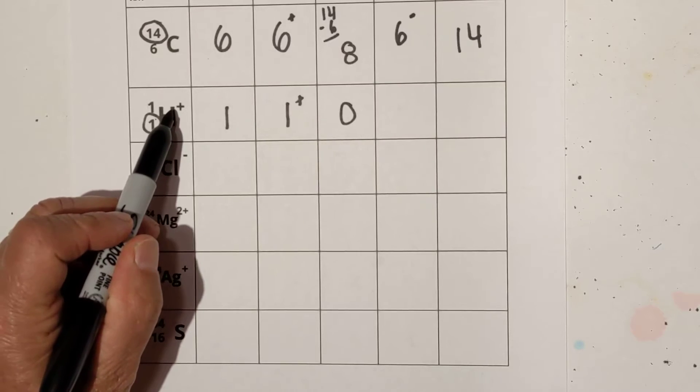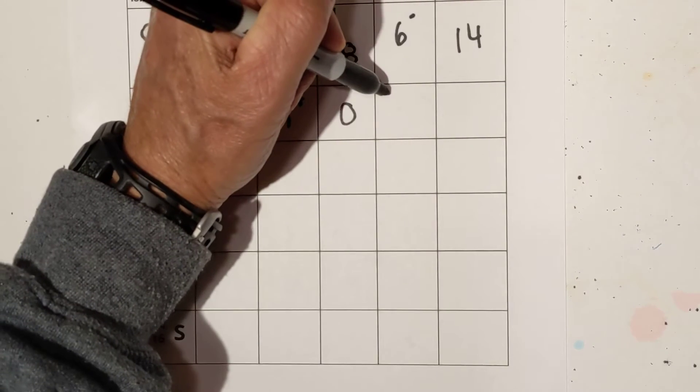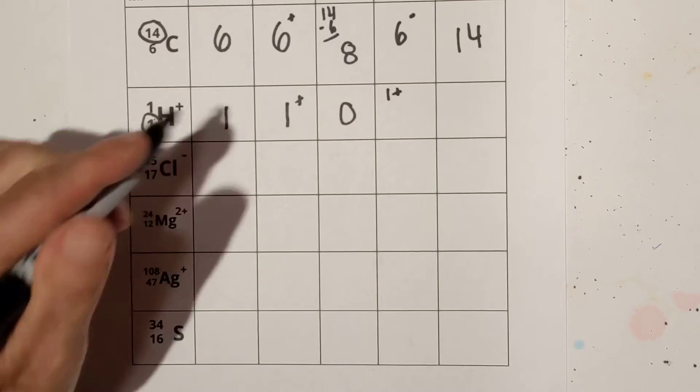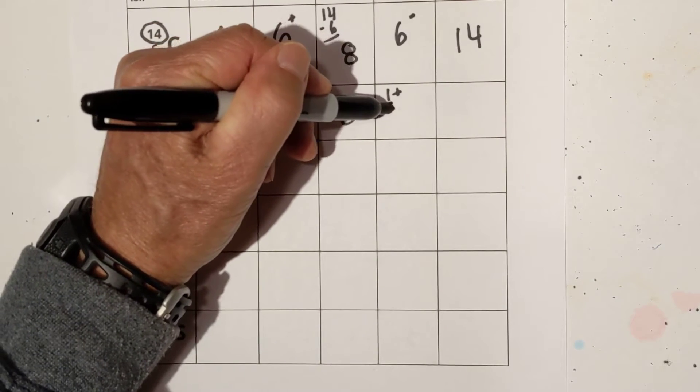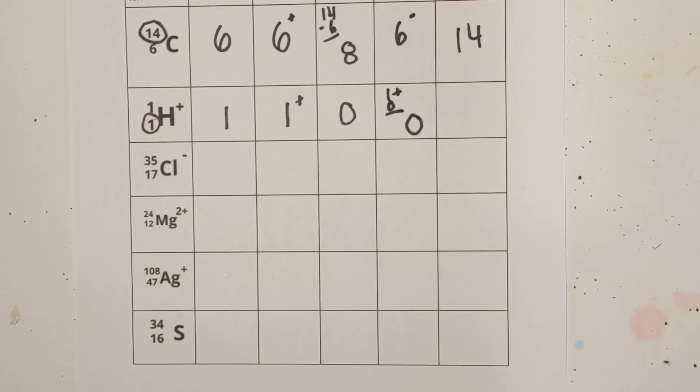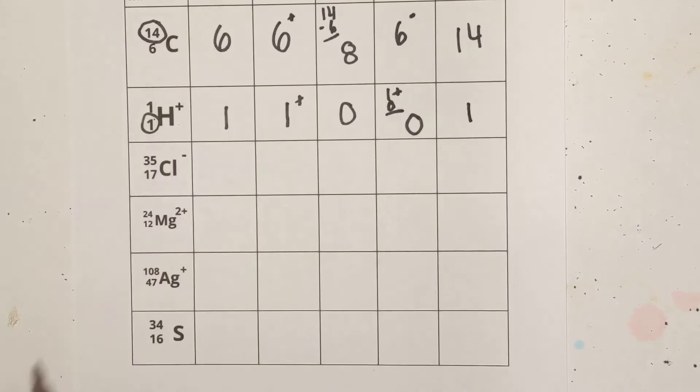Now for the electrons, it is an ion, it has a plus one charge. Remember, protons have a plus one, so what will you subtract from one to equal one, and that is zero, so it has zero electrons. Yes, zero electrons, and then the mass number is one.